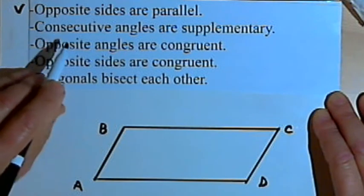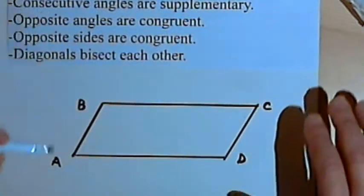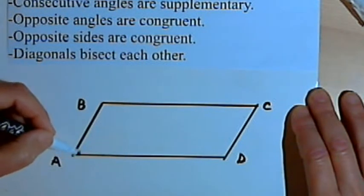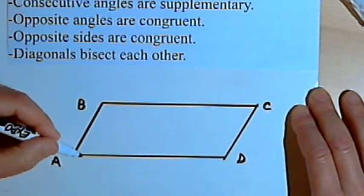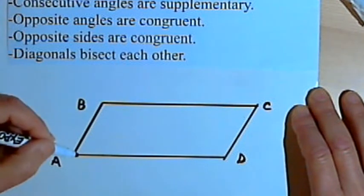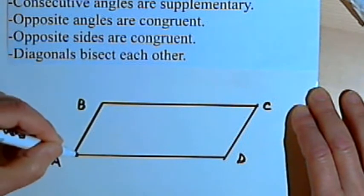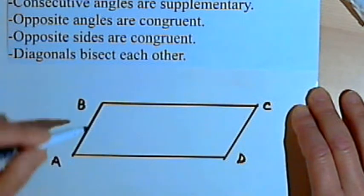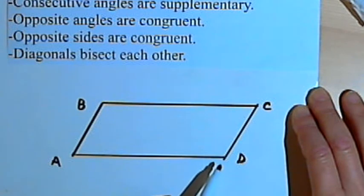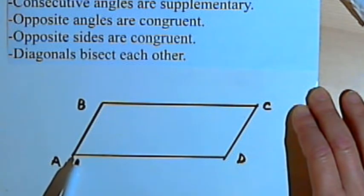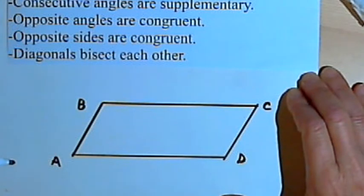The second property says consecutive angles are supplementary. If I've got a parallelogram — we'll call it ABCD — angles A and B are consecutive. As I go around the parallelogram, they occur one after the other. B and C would be consecutive, C and D would be consecutive, and D and A would be consecutive. Let's show that angles A and B are supplementary.